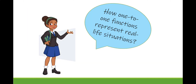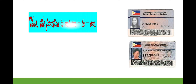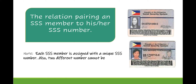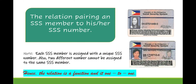Now, the question is: how do one-to-one functions represent real-life situations? Let's try to determine whether the following examples are one-to-one or not. For example, the relation pairing an SSS member to his or her SSS number. Note that each SSS member is assigned a unique SSS number. Also, two different members cannot be assigned the same SSS number. Hence, the relation is a function and it is a one-to-one function.